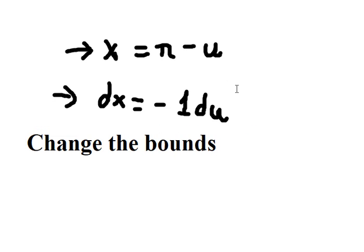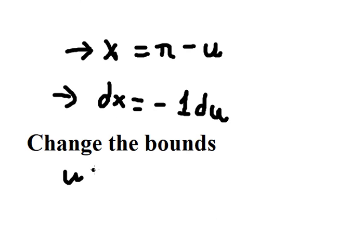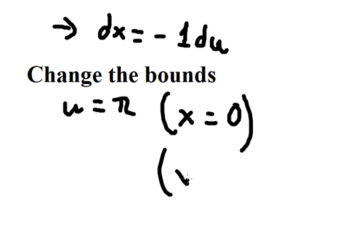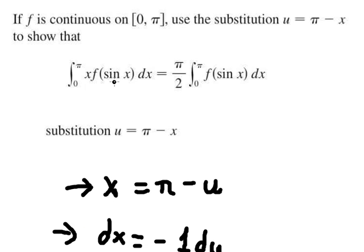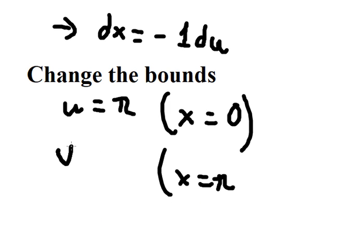Later we need to change the bounds. When x equals to zero, we have u equals to π. When x equals to π, we put the value of π here and we have u equals to zero.